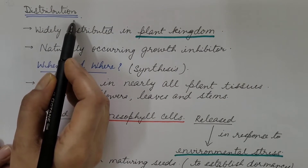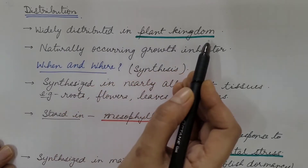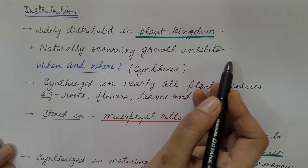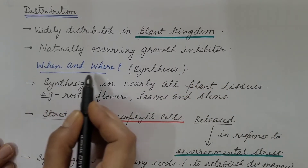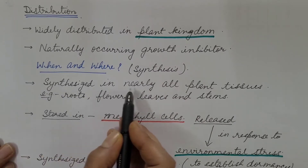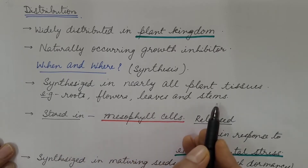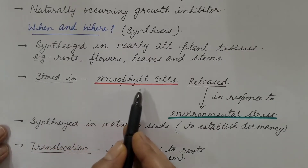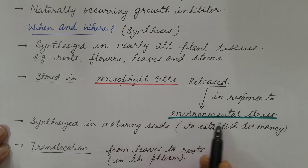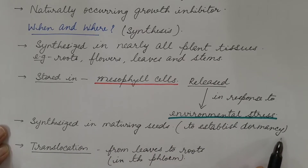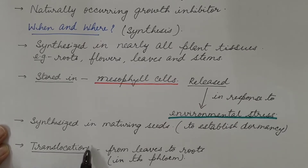Now, distribution of abscisic acid. It is widely distributed in the plant kingdom. It is a naturally occurring growth inhibitor that occurs endogenously. It is synthesized in nearly all plant tissues — for example, roots, flowers, leaves, and stems. It is stored in mesophyll cells and released in response to environmental stress. It is also synthesized in maturing seeds in order to establish dormancy during unfavorable conditions. It is translocated from leaves to roots via the phloem.